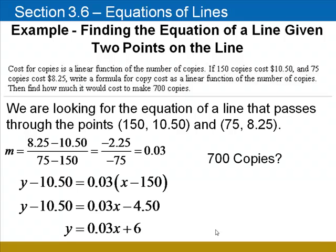To find the cost for 700 copies, we'll substitute 700 for x in the equation that we just found. .03 times 700 equals 21, and 21 plus 6 equals 27, so it would cost $27 to make 700 copies.